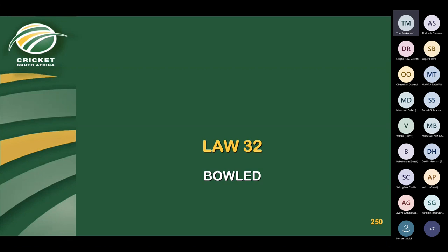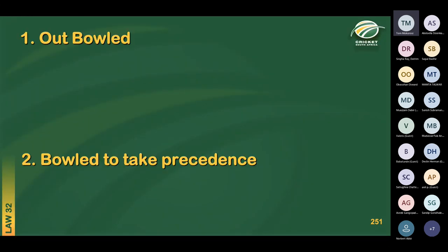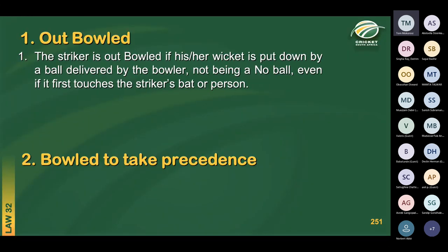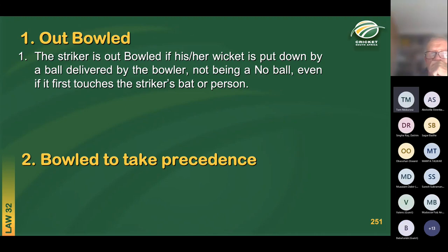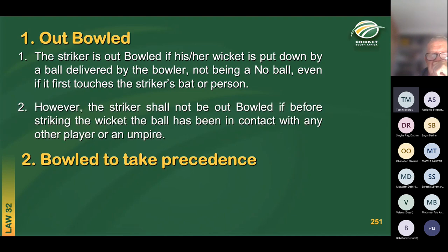The first mode of dismissal is also the most important — the boss of all modes of dismissal: bowled. When is a batter out bowled? The striker is out bowled if his or her wicket is put down by a ball delivered by the bowler, not being a no-ball, even if it first touches the striker's bat or person.